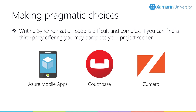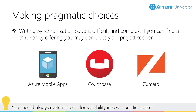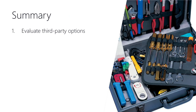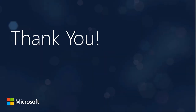Here you can see three popular third-party systems you can integrate into your mobile apps: Azure Mobile Apps — which Xamarin University has several classes about — Couchbase, Zumero, Realm, and a few others. I highly suggest you go evaluate these tools and see if they make sense in your application. Leave it to the experts for the synchronization. Thank you for watching this video on data caching and synchronization with Xamarin University.